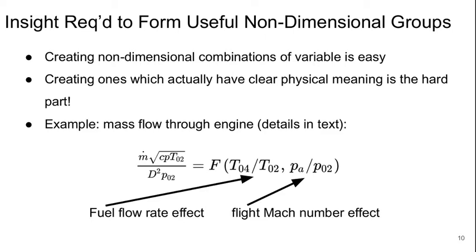Now in order to form useful non-dimensional parameters we need to have some kind of insight. We can create arbitrary non-dimensional combinations of variables based on the Buckingham-Pi theorem. This is not difficult to do. But creating ones that actually have some kind of clear physical meaning is really the difficult part.